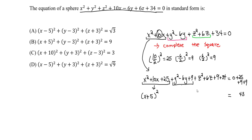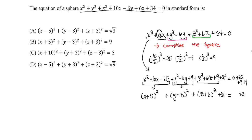y squared minus 6y plus 9 reduces to y minus 3 squared — don't forget that negative. And z squared plus 6z plus 9 reduces to z plus 3 squared. What you're essentially doing is taking the square root of the last term: square root of 25 is 5, square root of 9 is 3, keeping the sign from the middle term. We also have plus 34 on the left.